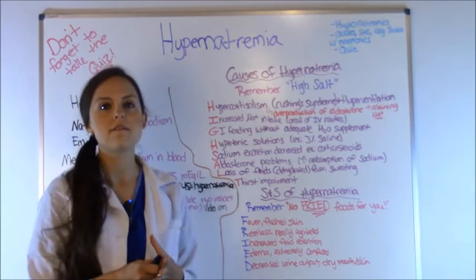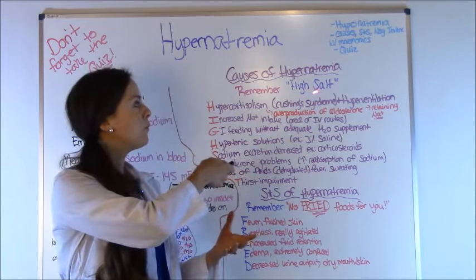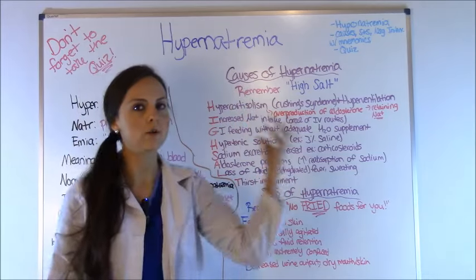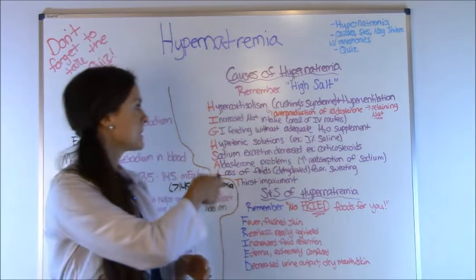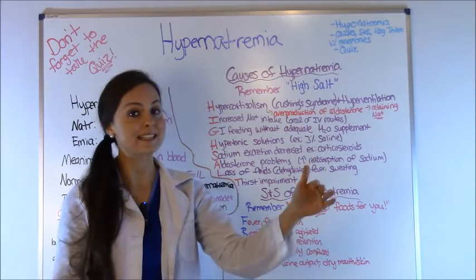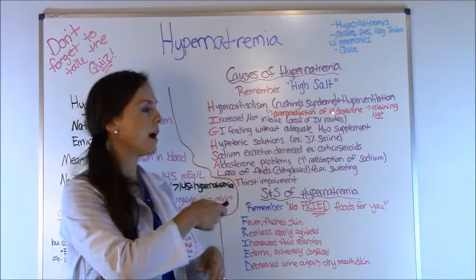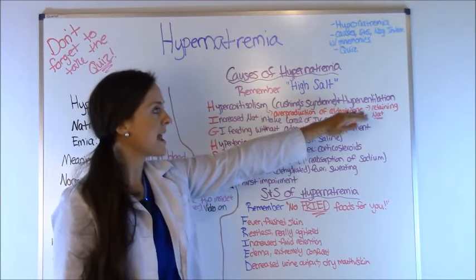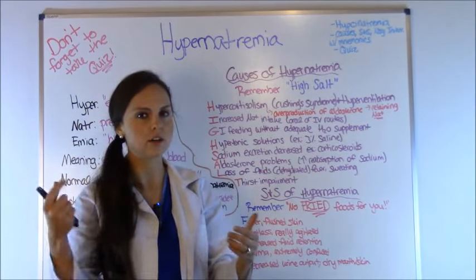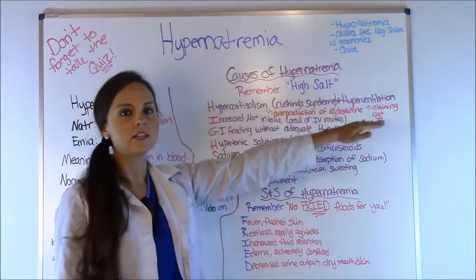Let's look at the causes of hypernatremia. To remember these, use the phrase HIGH SALT, with each letter correlating to a cause. H is for hypercortisolism — that's Cushing's syndrome, the opposite of Addison's disease seen in hyponatremia. Hypercortisolism involves overproduction of aldosterone, causing sodium retention and potassium decrease. Hyperventilation can also cause it. I is for increased sodium intake, either from eating lots of salt or from IV solutions. G is for GI tube feedings, where inadequate water supplementation can raise sodium levels. The other H is for hypertonic solutions such as 3% saline.